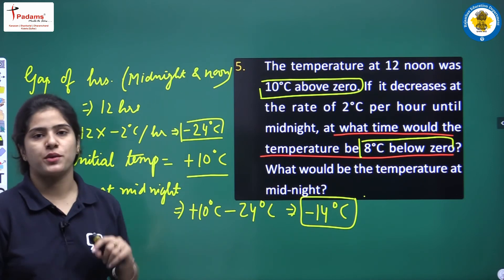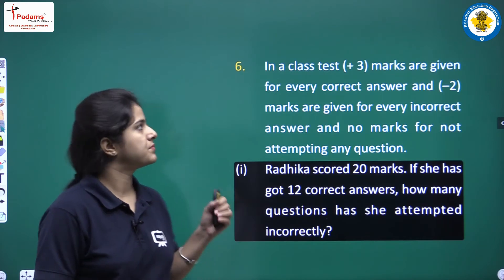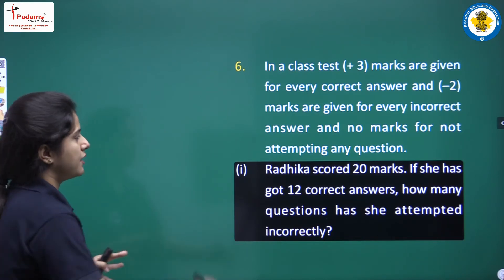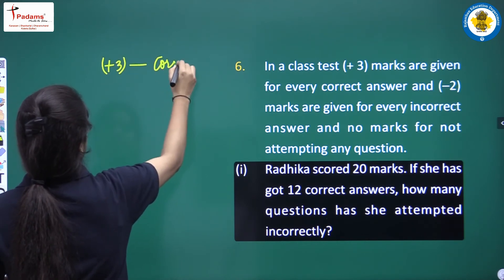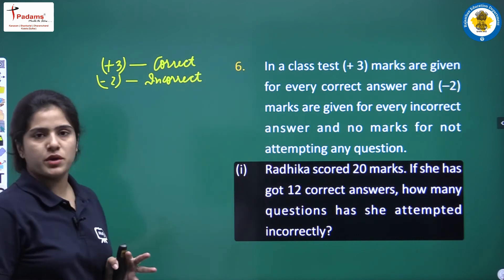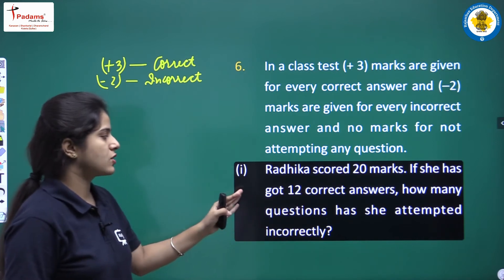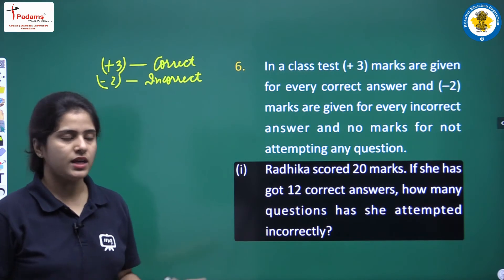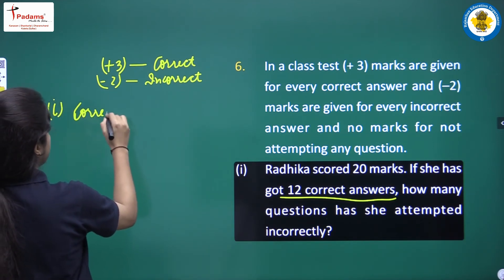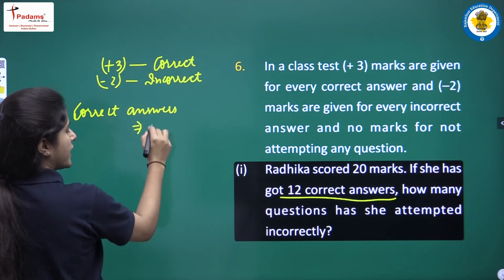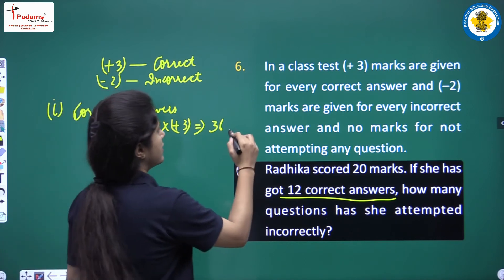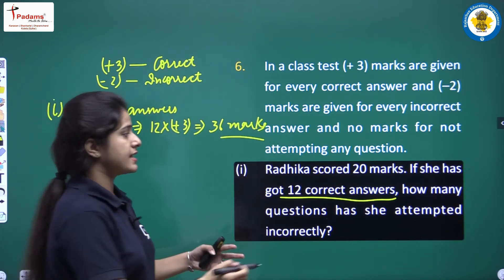Question 6: In a class test, plus 3 marks are given for every correct answer, minus 2 marks for every incorrect answer, and zero for unattempted questions. Radhika scored 20 marks. If she got 12 correct answers, then for those 12 correct answers she would have received 12 × 3 = 36 marks.